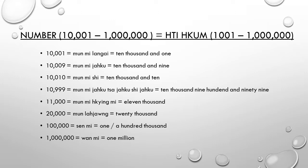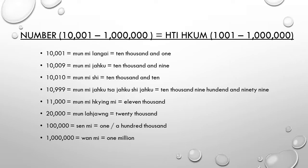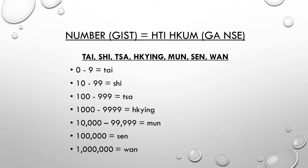From now on, we are going to count from 10,001 up to 1 million. 10,001 and 10,009, 10,010, 10,999, 11,000, 20,000, 100,000, and 1 million. Counting numbers is fun, right?